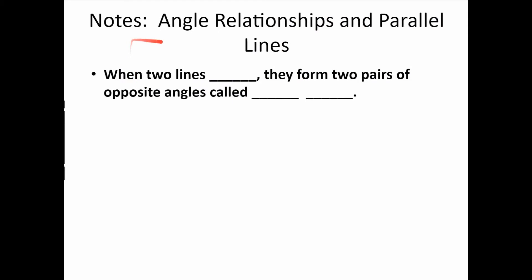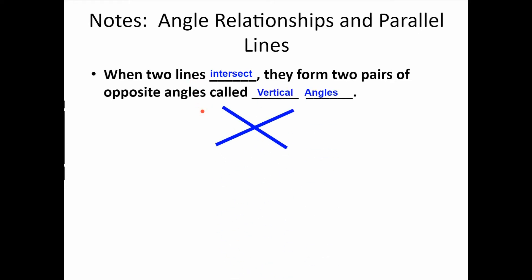Moving on — angle relationships and parallel lines. When two lines intersect, they form two pairs of opposite angles called vertical angles. Angles 1 and 3 are vertical — they share a vertex and they're across from each other, making them congruent, meaning the same angle measure. The same is true for angles 2 and 4: they are vertical and therefore congruent with equal measure.